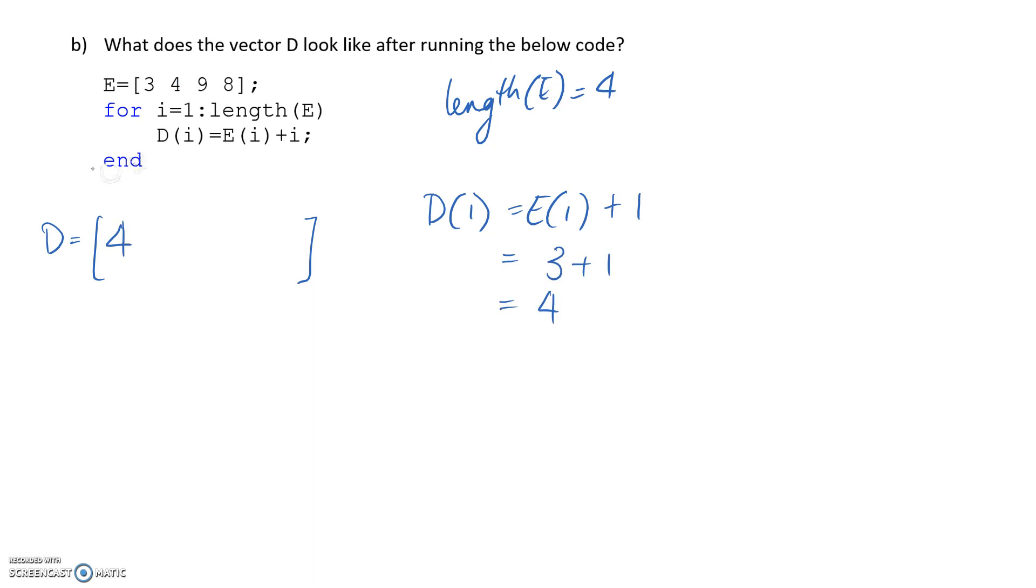We've reached the end of our loop. So we go back and increment to the next value, which is i is going to be equal to 2. So we go down here. We're looking in the D matrix and we're writing to the second element of it, since i is now equal to 2. And it's going to be equal to the second element in E, plus i is still equal to 2, so plus 2. So if we go look up here, the second element in E is 4. So 4 plus 2 is equal to 6. So that gets written to our second element up here.